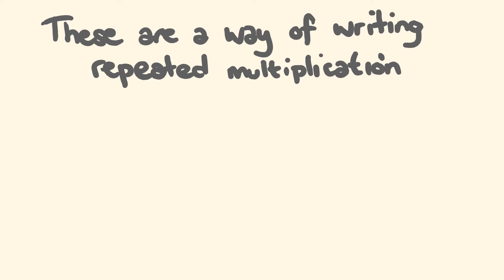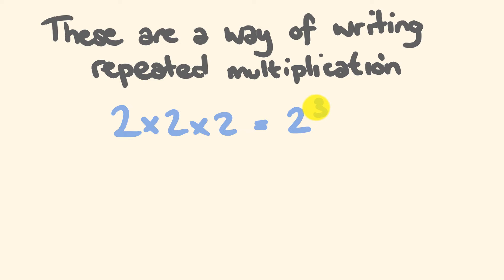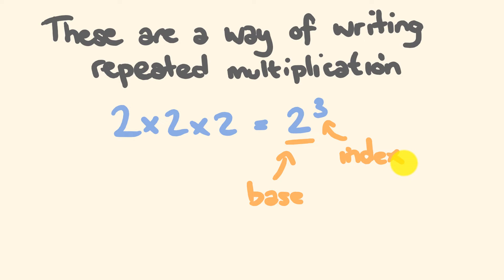For example, say we had 2 times 2 times 2. The way we could write this in index form is 2 to the power of 3. We have two particular parts: the 2, which is the number being multiplied by itself — this is called the base — and the 3 up here, which is how many times 2 has been multiplied by itself. This is called the index, or the exponent, or the power.